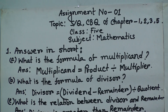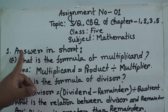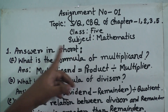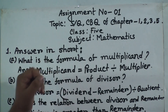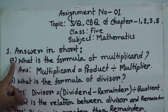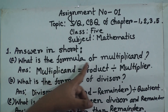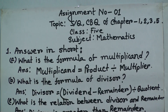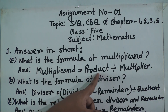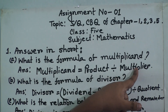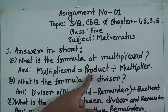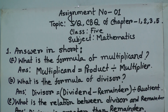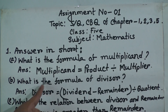Write your name, roll, and section properly. Question number one: answer in short. (a) What is the formula of multiplicand? The answer is: product divided by multiplier. (b) What is the formula of divisor?